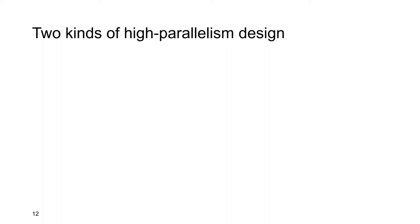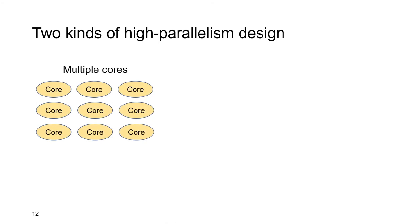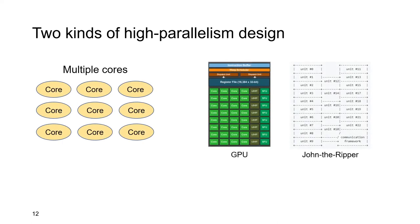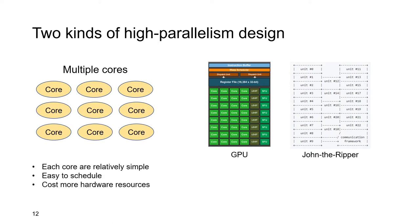To accelerate the brute force attack on SHA-256-crypt, it's important that the accelerator has high parallelism because brute force attack is easy to parallelize. Typically, there are two kinds of design to improve parallelism. One is to build the accelerator with many relatively simple processing cores — for example, the GPU and the FPGA-based SHA-256-crypt accelerator in John the Ripper. In such design, each core has its own control logic, which makes it easy to schedule, but it will cost more hardware resources.